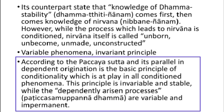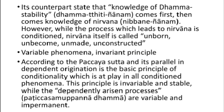The fifth principle is variable phenomena. According to the Kayasutta, the acquisition of dependent origination shows us the basic principles of conditionality and dhyana, which can be used as logic to see invariable or stable phenomena, while dependent origination or causation, according to Buddha, shows us invariable or impermanent phenomena.